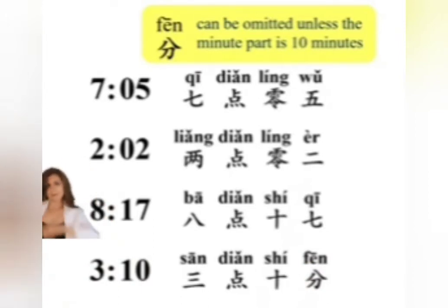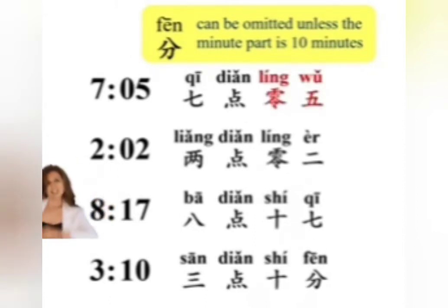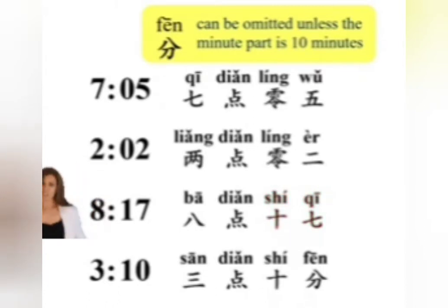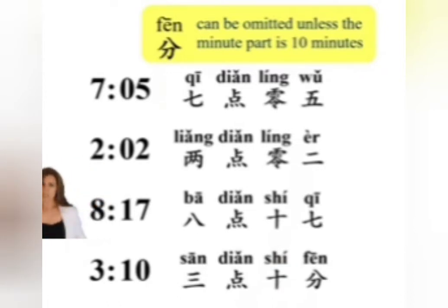In case you're wondering why: whenever we tell the time in Chinese, we say at least two-character numbers for the minutes. If the number of minutes is less than ten, we add 零 to make it two numbers, such as 零五 or 零二. If the number is greater than ten, we also say at least two characters, such as 十七. Ten — 十 — is the only case where you say just a one-character number. If you stop at 十, it feels incomplete, because people are waiting to hear another number. To make it sound complete, you have to say 分.